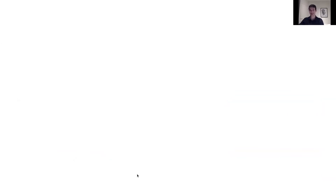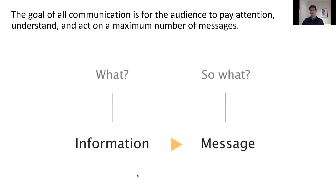The first thing before we really start is a definition — the definition of a message. Most of the time, especially as scientists, we think about information and data. I want you to get thinking about a message. A message is a 'so what' rather than a 'what.' The goal of communication is to get your audience to pay attention to, understand, and act on a maximum number of messages. In any presentation we do, we'll provide information, but that's the bare minimum. To really move forward, we want to get our audience to act on messages. Being an engineer, I'm going to give some examples from my background and some more bio-related stuff.